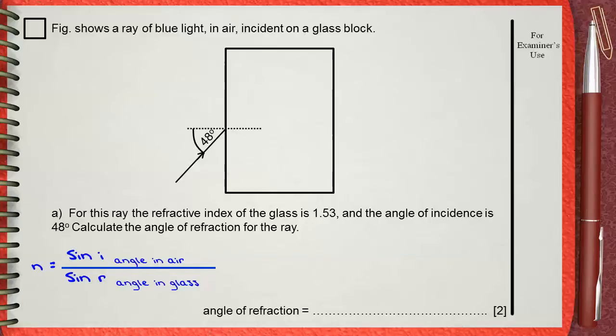If we rearrange this, we can get sin r equals sin i divided by the refractive index, which is sin 48, the angle of incidence, divided by 1.53, the refractive index.